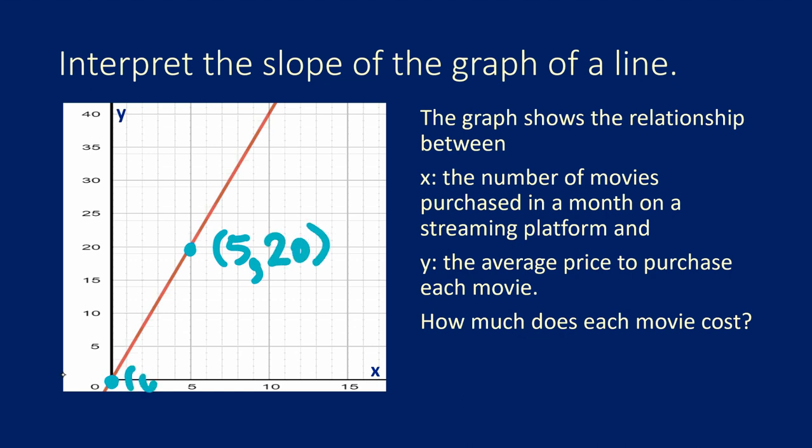So from the point (0, 0) to the point (5, 20), what is the rise and what is the run? That way we can know what the slope is, which will give us our rate of change.